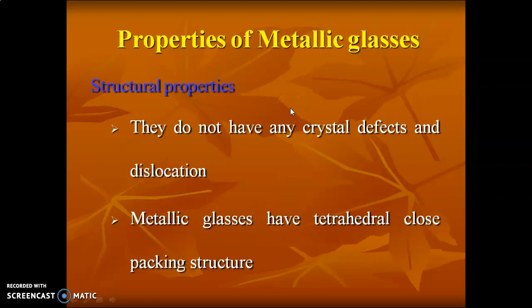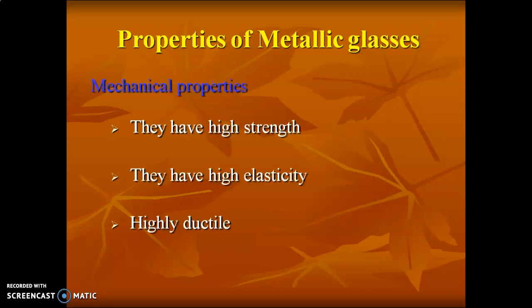The properties of metallic glasses: first, structural property — the structure plays a vital role in a material. Metallic glasses do not have any crystal defect or dislocation. They have a tetrahedral structure where atoms are very closely arranged with no crystal defects.